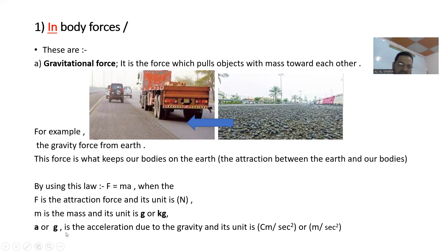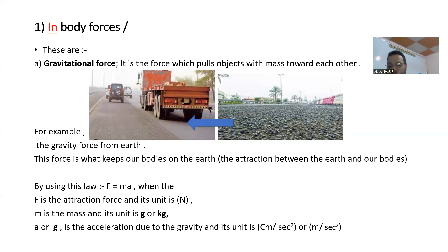When F is the force, m is mass, and a is acceleration — or in another source written as g, the same meaning. The unit of acceleration, as we know, is centimeter divided by second squared, or meter divided by second squared.